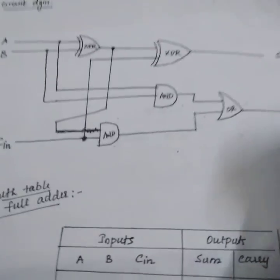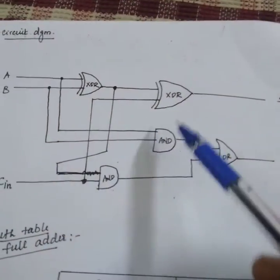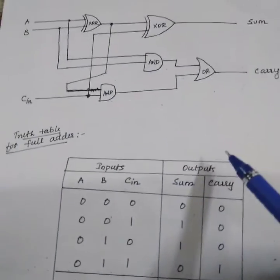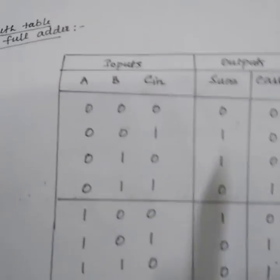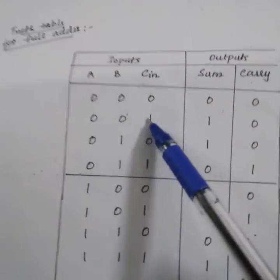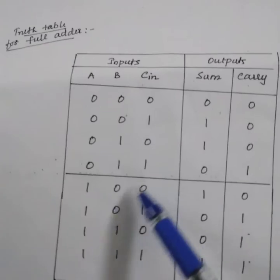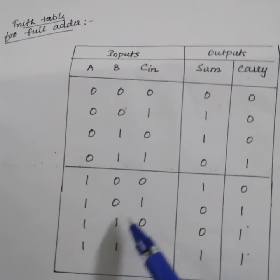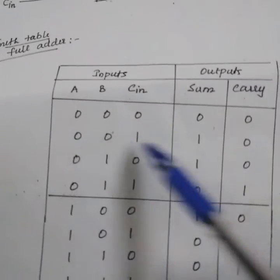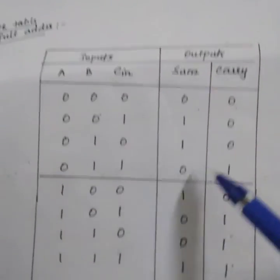This is the circuit diagram: 2 XOR, 2 AND, and 1 OR. Using this we can write the equation. This is the truth table for three inputs: 0 0 0, 0 0 1, 0 1 0, 0 1 1, 1 0 0, 1 0 1, 1 1 0, 1 1 1. According to this, sum and carry are being calculated.